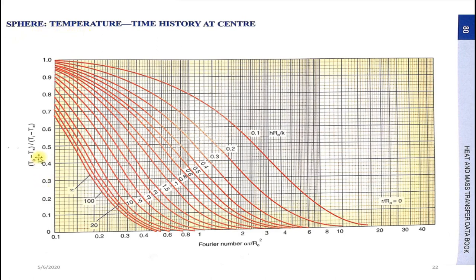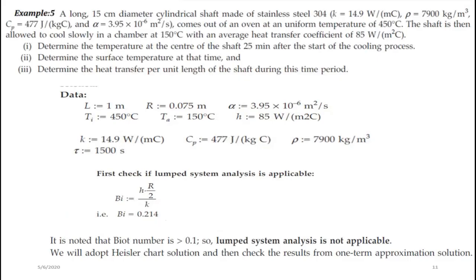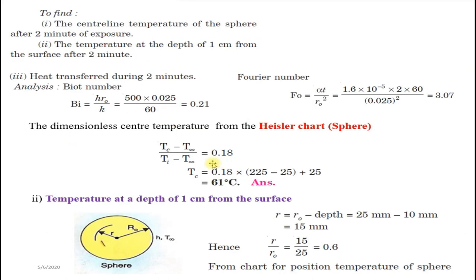From the first graph of the sphere, locating Biot number 0.21 and Fourier number 3.07, we read the y-axis: (T₀ − T∞)/(Ti − T∞) = 0.18. Using this, the center line temperature Tc = 0.18 × (Ti − T∞) + T∞ = 61°C.